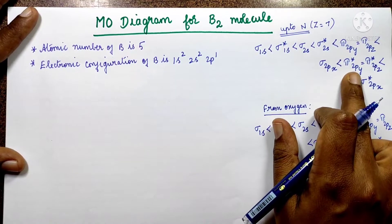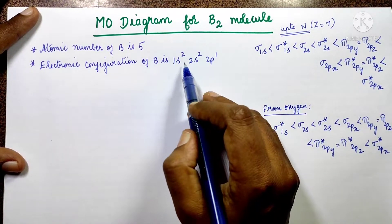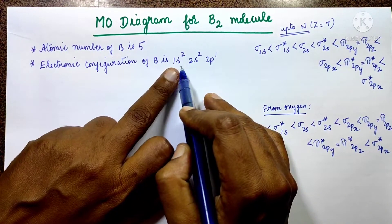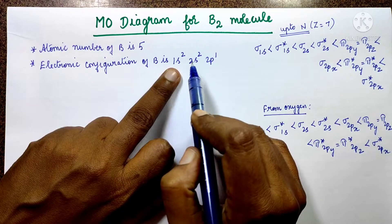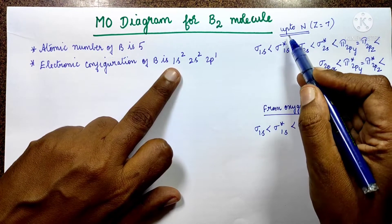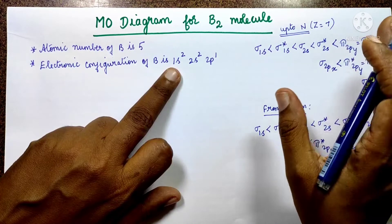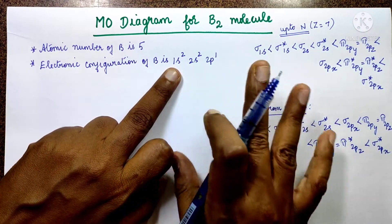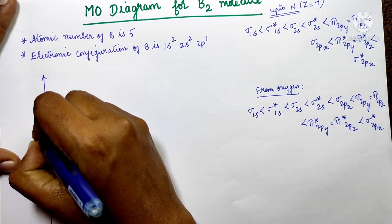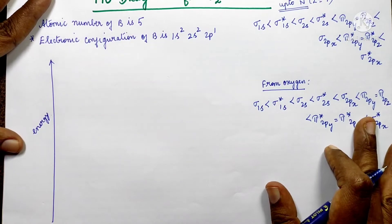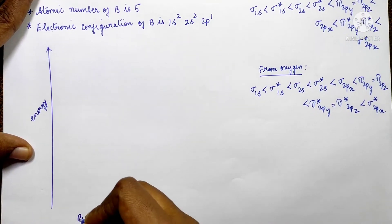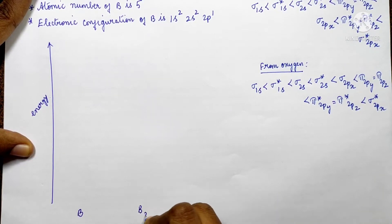We will follow the nitrogen order for boron and go to the orbital diagram. This is a boron atom on each side and a boron molecule in the middle. The energy increases going upward. We will go from 2s and 2p orbitals.